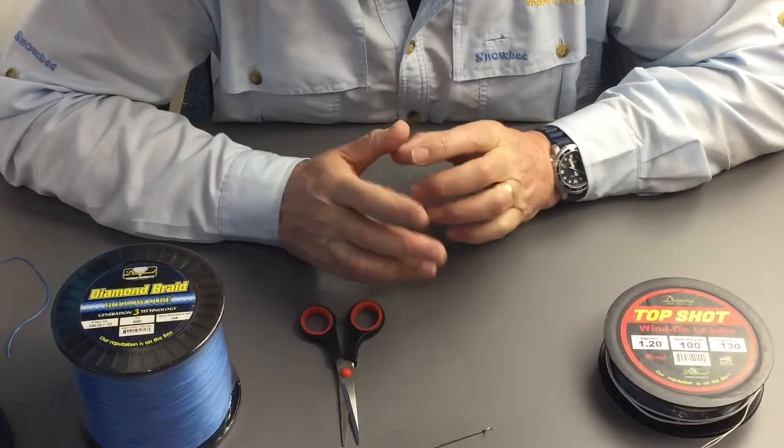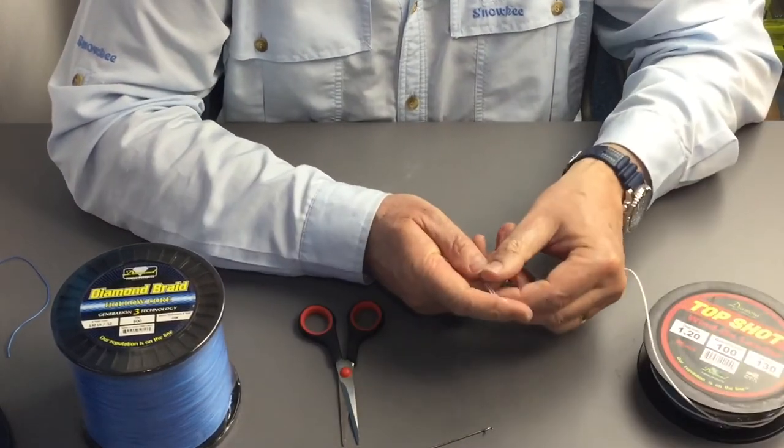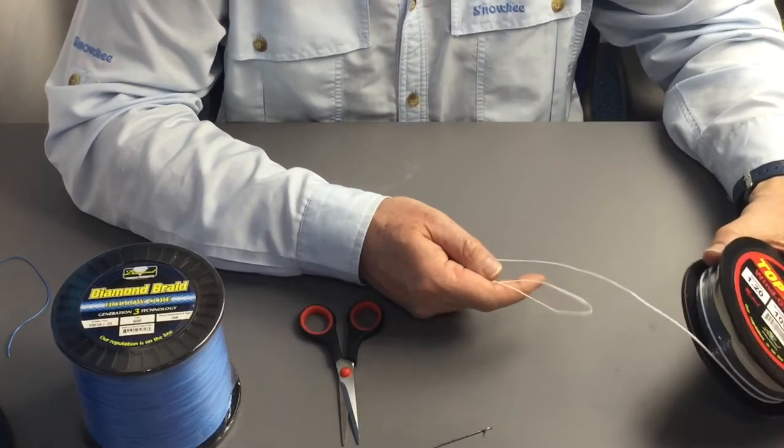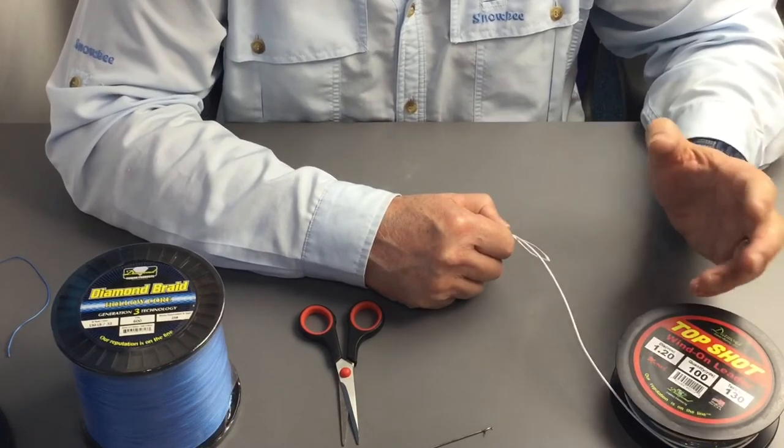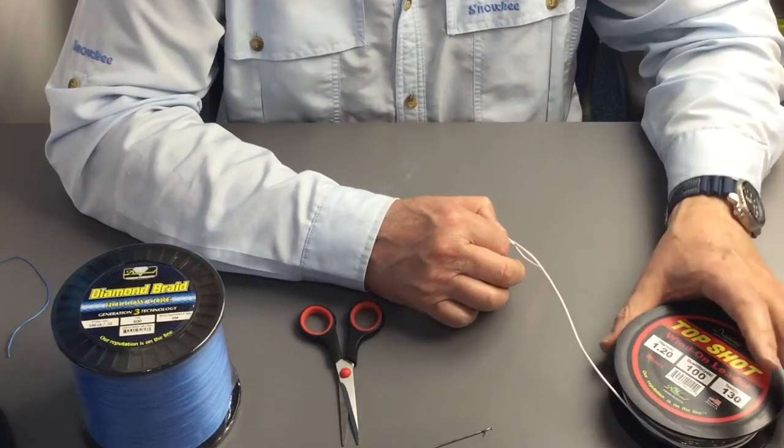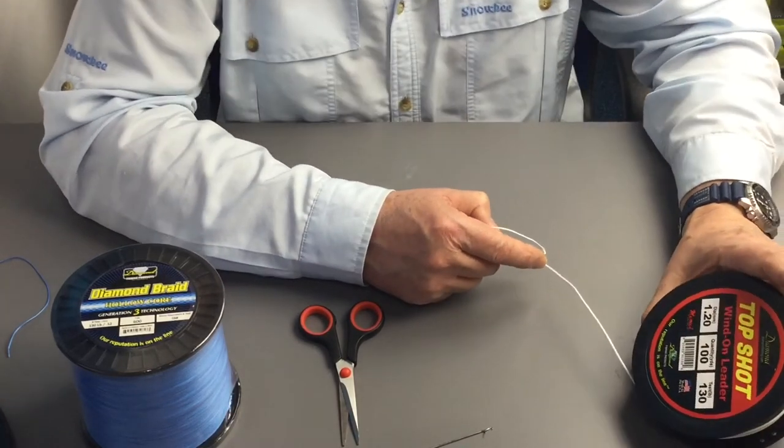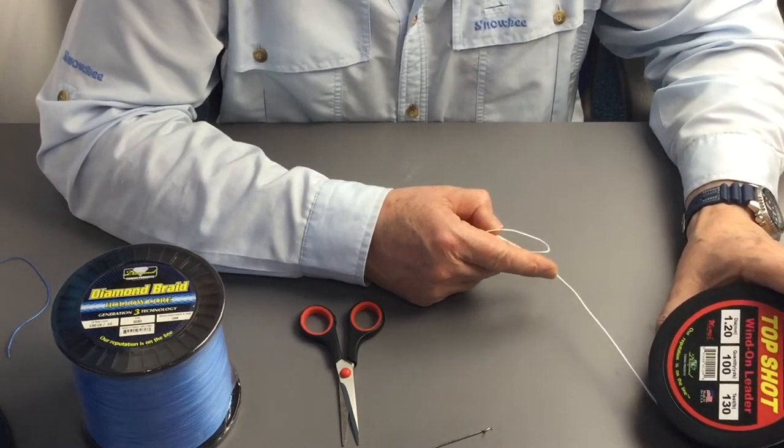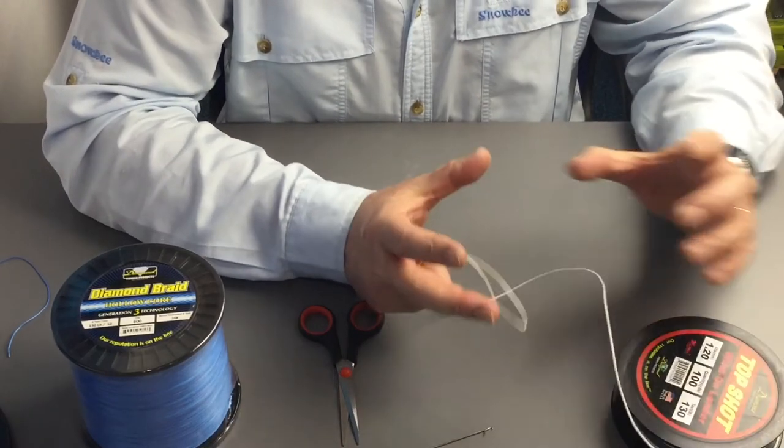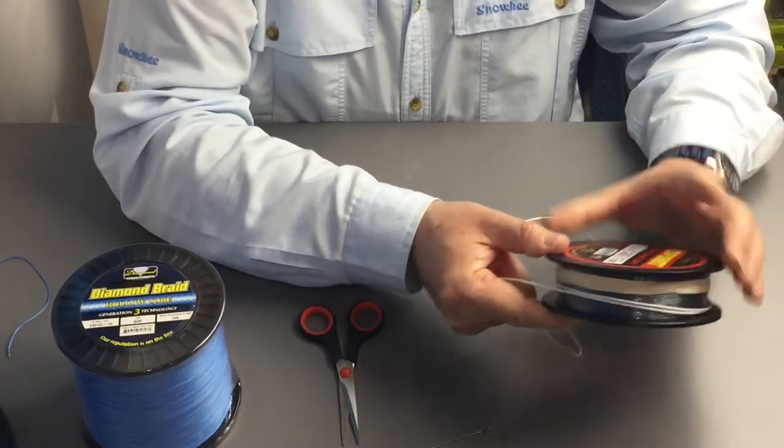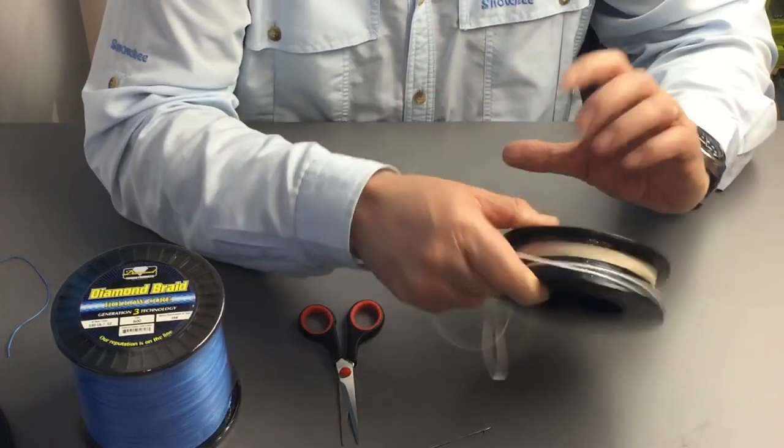Finally we're going to use a pre-made top shot. This one actually has a loop on it already, it's spliced onto the mono, so you can just wind that straight onto your reel. Obviously you have to leave enough space on the spool to accommodate this. This top shot is 130 pounds breaking strain, and when we loop it on we just want to make sure that the loop in the end of the hollow core is big enough to go around this spool.